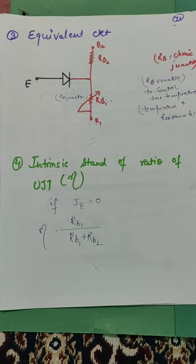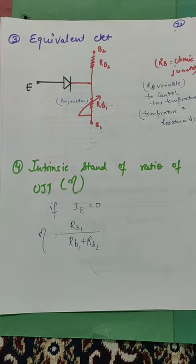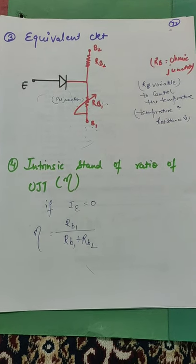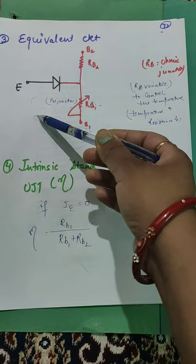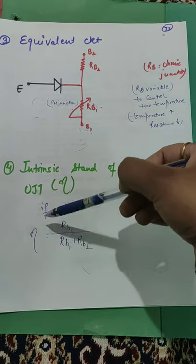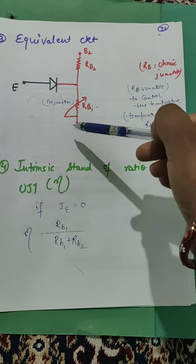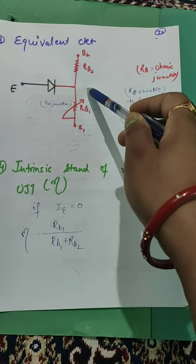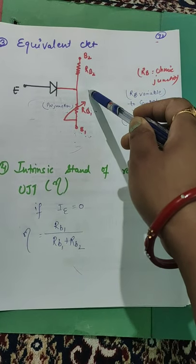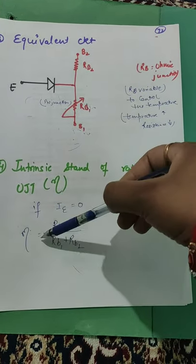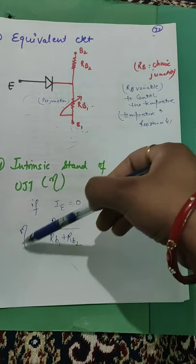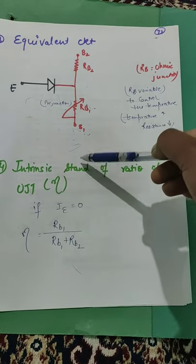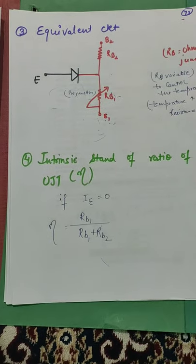The intrinsic standoff ratio: if emitter current is zero, eta is equal to RB1 divided by (RB1 plus RB2). That is defined by eta — the intrinsic standoff ratio of UJT.